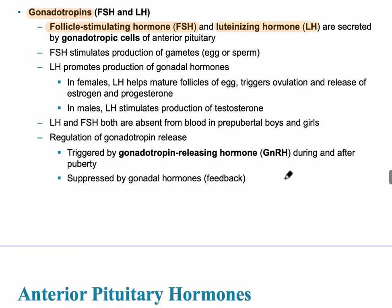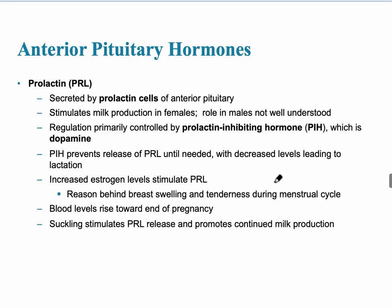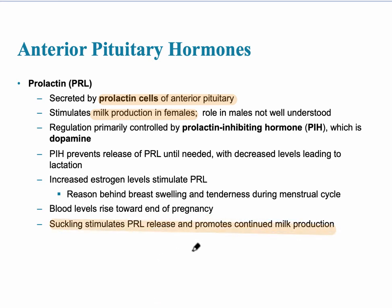The last hormone is prolactin (PRL), secreted by prolactin cells of the anterior pituitary gland. Its role in males is not well understood, so it's primarily associated with females — it stimulates milk production. The target tissue is breast tissue, and blood levels of prolactin rise toward the end of pregnancy in preparation for milk production. The trigger for release is stimulation of the breast; suckling of the infant stimulates prolactin release, promoting continued milk production and lactation.